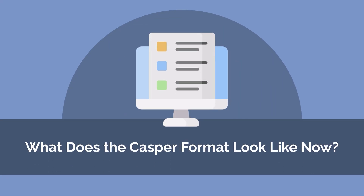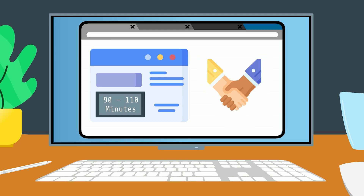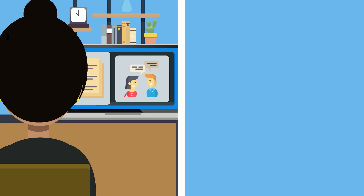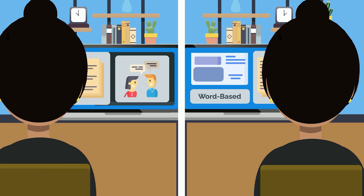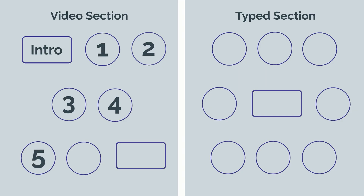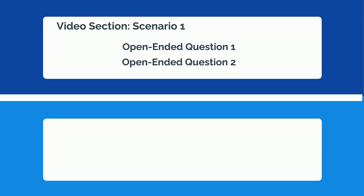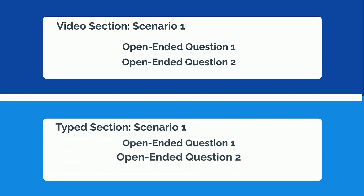Casper now takes 90 to 110 minutes to complete, including an introduction and two optional breaks. The test is composed of 14 scenarios, some video-based and some word-based. The test is divided into two response sections: a video response section of six scenarios and a typed response section of eight scenarios. Each scenario is followed by two open-ended questions in the video section and three open-ended questions in the typed section of the test.